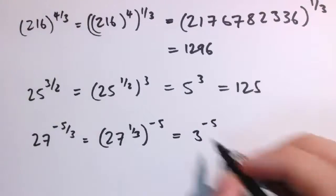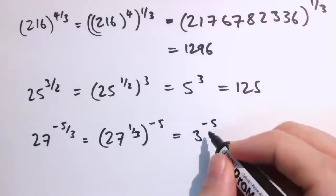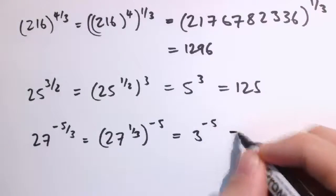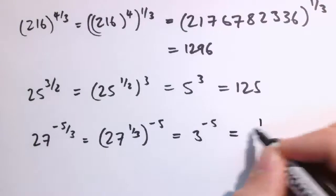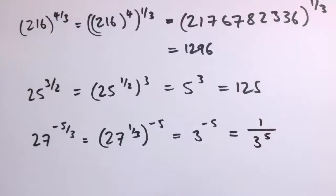And hopefully you know that if you've got a minus in the index, that means you take the reciprocal of it. So 3 to the minus 5 is 1 over 3 to the 5. And 3 to the 5 is 243, so that's 1 over 243.